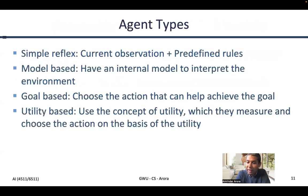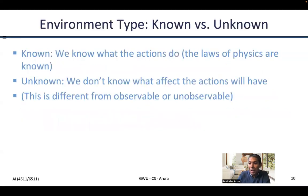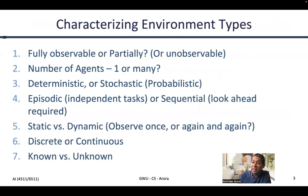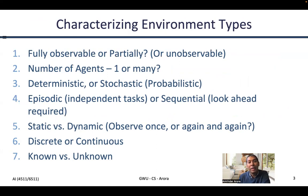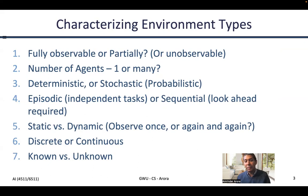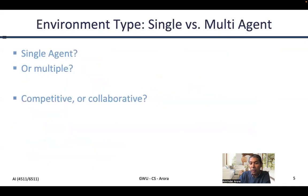So those are the seven different environment types. Let's go through them quickly on this slide. The environment may be fully observable or partially observable; may have one or many agents, which might have competitive or collaborative working relationships. The environment may be deterministic or probabilistic; it could be episodic or sequential; static or dynamic — referring to whether the environment must be observed once or again and again before making a decision. The environment could be discrete or continuous, and it might be known or unknown in terms of whether its rules of physics are known.